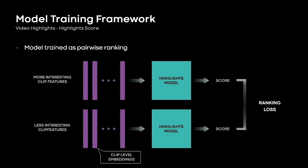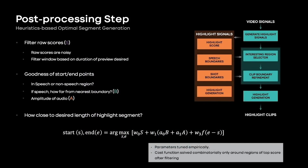To train our model, we use a Siamese network with a ranking loss. Embeddings from the classification trunk for the more interesting regions of a video are provided to one tower, while those from the less interesting regions are provided to the other tower. The model is then trained to produce a higher score for the more interesting clips. This ML model provides a decent prediction of the interestingness of a video. However, this score cannot be used as is, especially when longer-form previews are desired. For this, we add a post-processing step to filter and select the more interesting regions of the video.